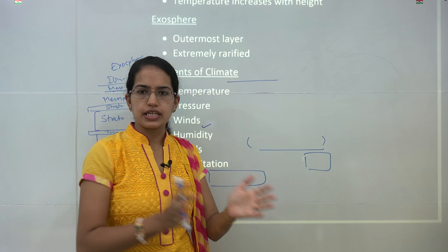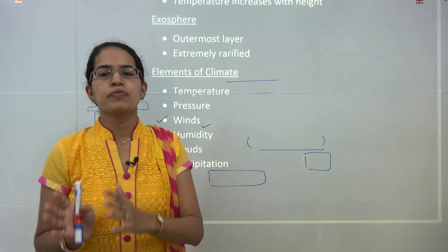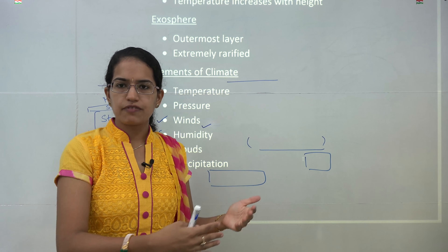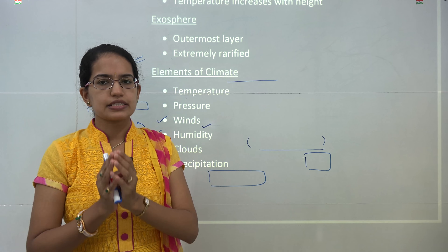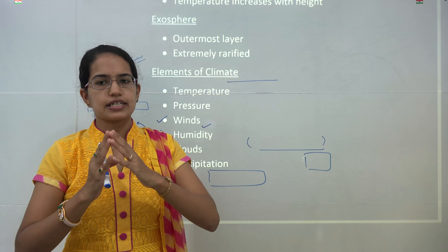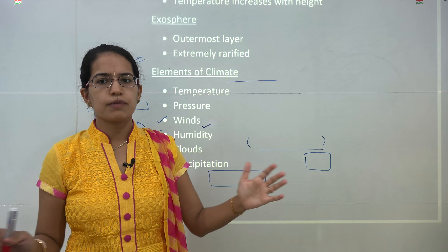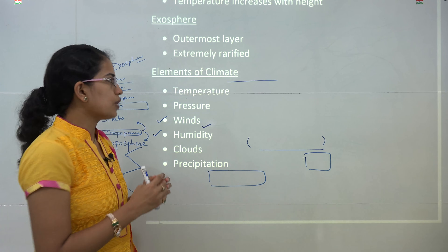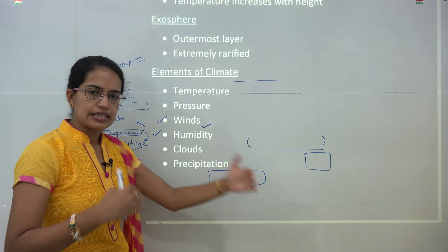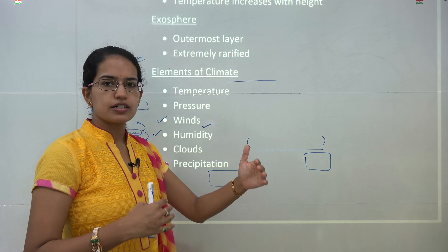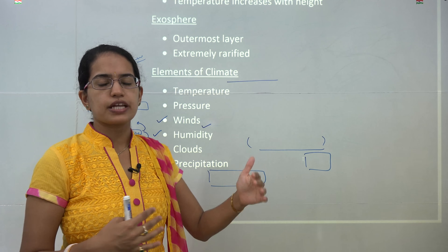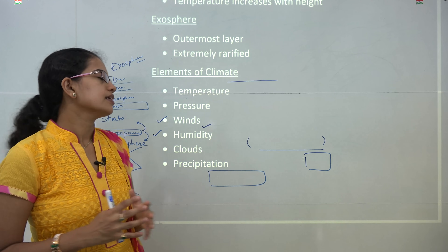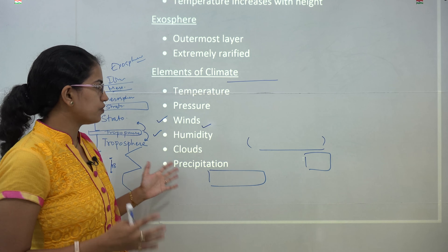There is a difference between weather and climate. Weather is a day-to-day phenomenon, however climate is a phenomenon that extends over a period of at least 30 years or more. So climate is defined based on an extensive range of time period, in contrast to weather.